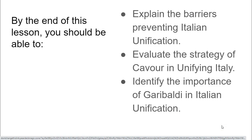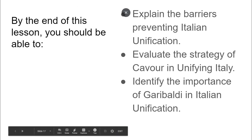So hopefully you can explain why Italian unification didn't happen before this point. Your other assignment is to compare the strategies of Cavour and Garibaldi, noting the various strengths and weaknesses of each strategy, and coming to a conclusion on who you think was the most influential.